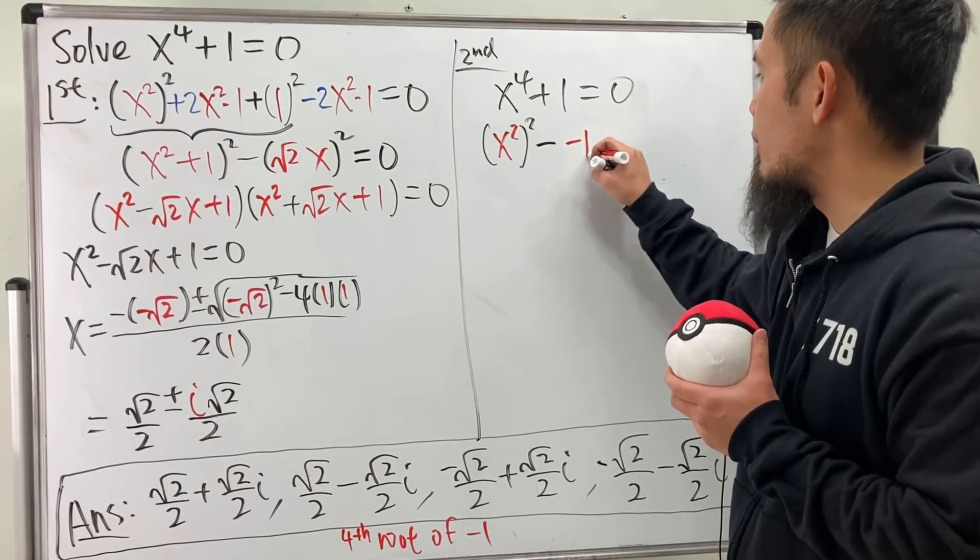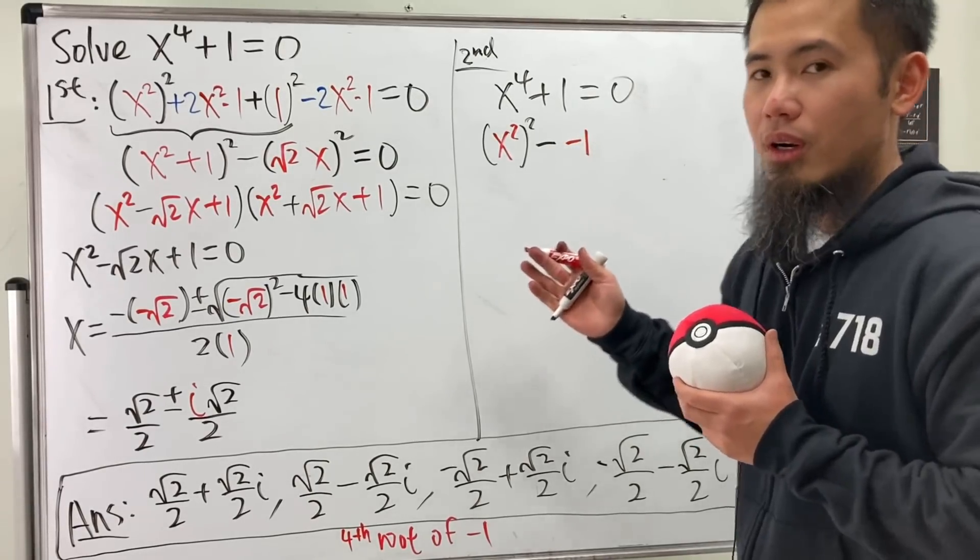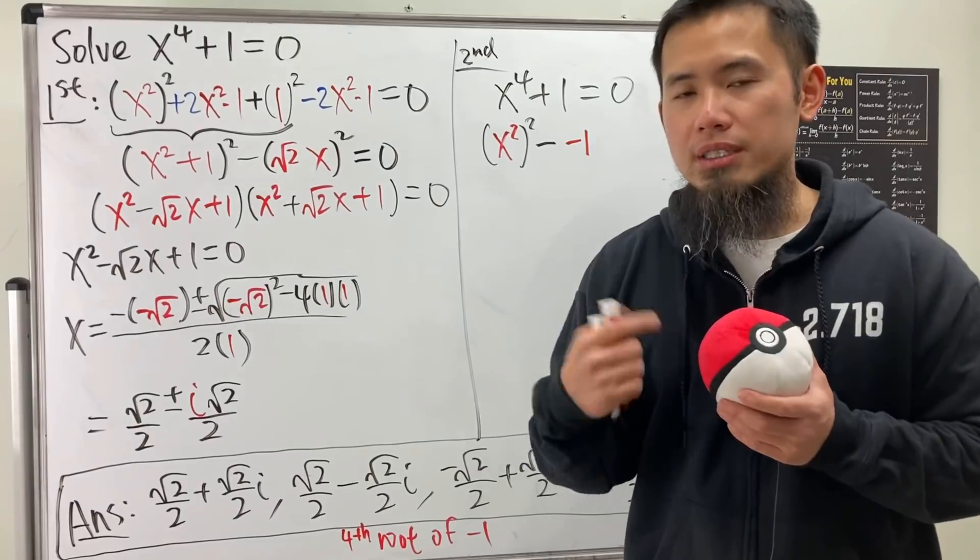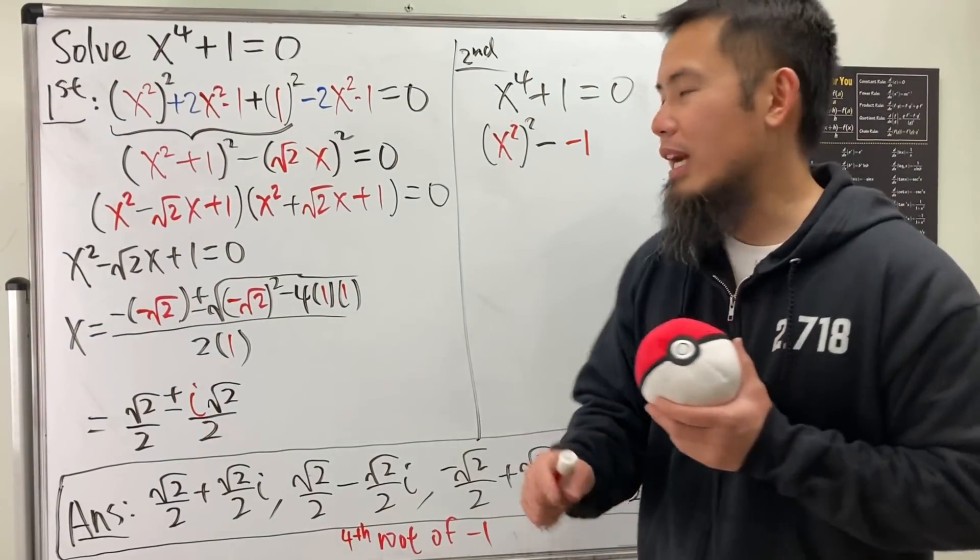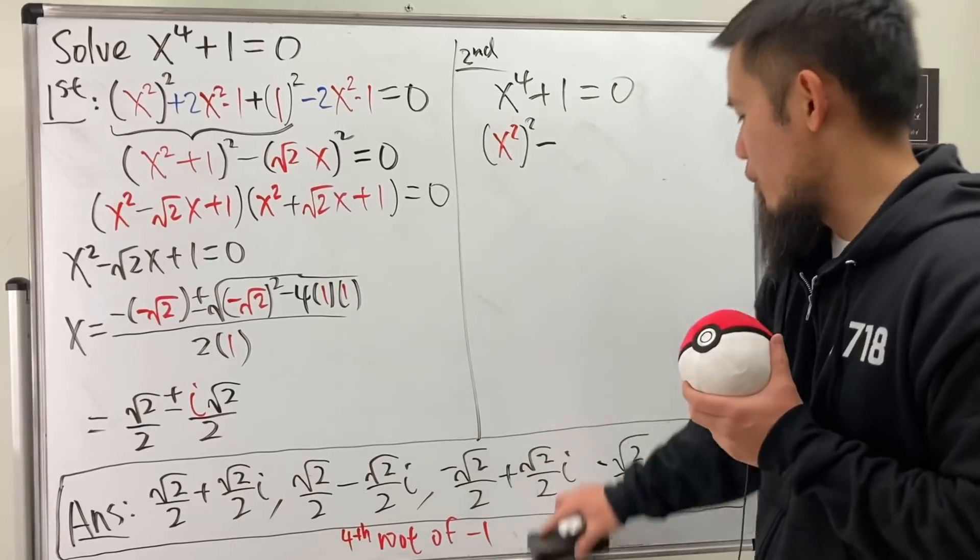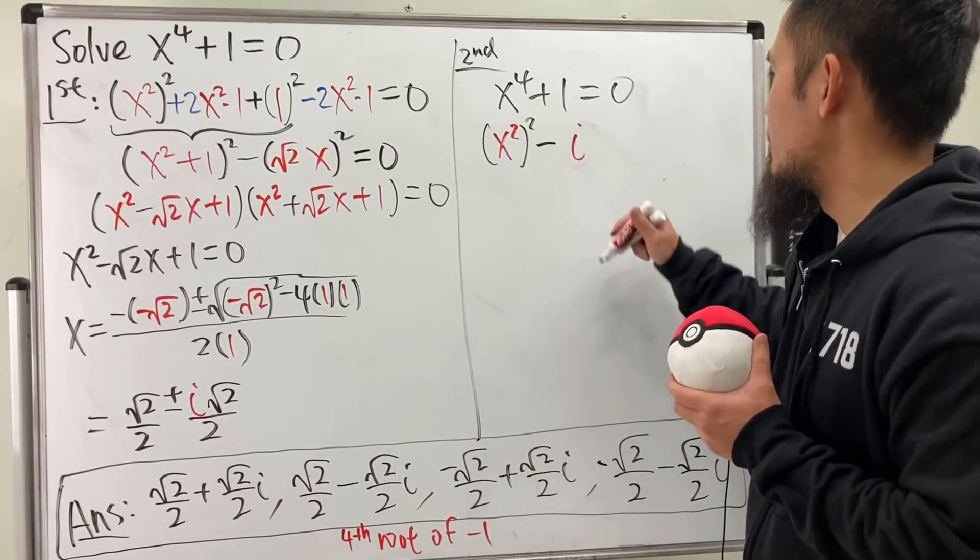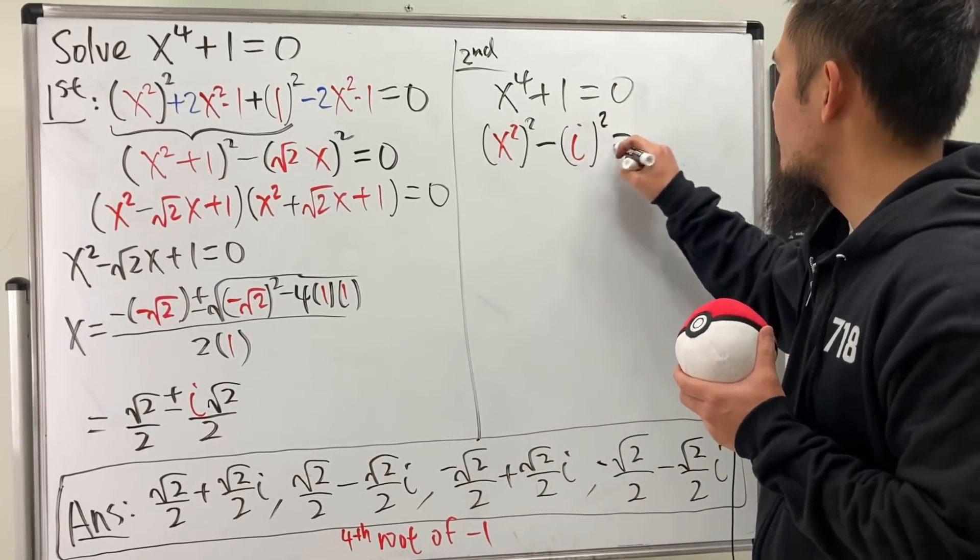Well, I need to have a minus 1 right here, right? Remember, everybody knows i squared is equal to negative 1. But you need to know that negative 1 is the same as i squared. So I'm just going to put it as i squared, just like that.